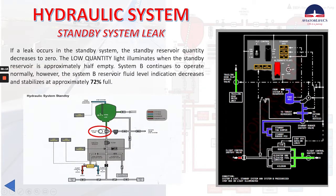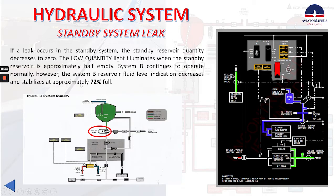Now let's talk about what happens when we have a leak on the standby system. If a leak occurs in the standby system, the standby reservoir quantity decreases to zero. The low quantity light illuminates when the standby reservoir is approximately half empty. System B continues to operate normally; however, the system B reservoir fluid level indication decreases and stabilizes at approximately 72% full.